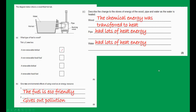Next, we have a question on energy. There's a diagram of a hot tub with a wood-burning stove heating the water. You need to tick the type of fuel used, give two environmental effects of using wood — the student wrote 'fuel is eco-friendly and gives out pollution' — and describe the change to the energy stores of the wood, pipe, and water as it's heated. The answer given is: chemical energy was transferred to heat; the pipe had heat energy; the water had heat energy. Find and fix the mistakes.